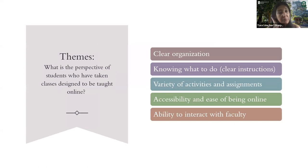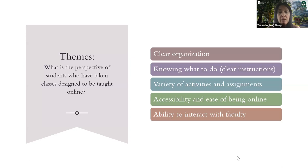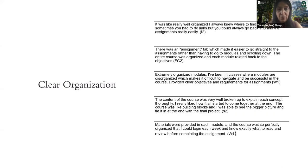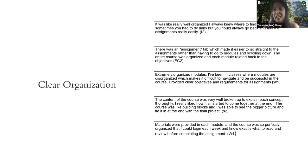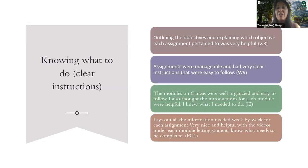Focusing on some of the themes for the student perspectives — answering the question of what is the perspective of students who've taken classes designed to be taught online — they talked about the clear organization and really liked knowing what to do. They gave a lot of examples about instructions, variety of activities, accessibility, the ease of being online, and the ability to interact with faculty. There were lots of examples about organization, modules, and how the course was laid out. Even though they didn't use terms like scaffolding, they talked about breaking up assignments. Things the faculty were learning, you could really see in the students' examples. There were a lot of comments about rubrics and clear instructions.